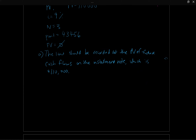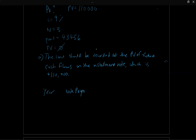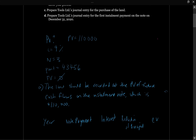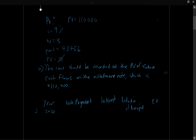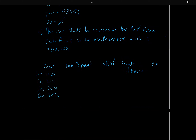An installment note amortization schedule is going to be a little different. We're still going to have the year, then the note payment, the interest, the reduction of principal, and the carrying value. We have three years: January 2020 when the note was issued, then December 2020, December 2021, and December 2022. When we issue the note, the carrying value starts at $110,000 — the present value of the cash flows — just as in our other amortization tables.